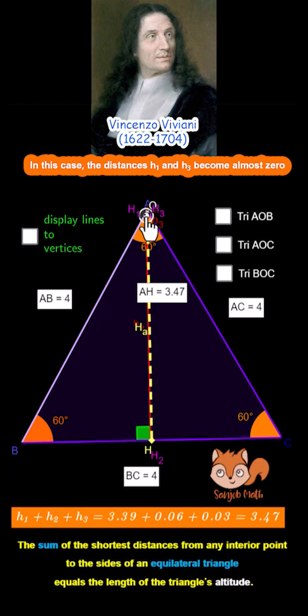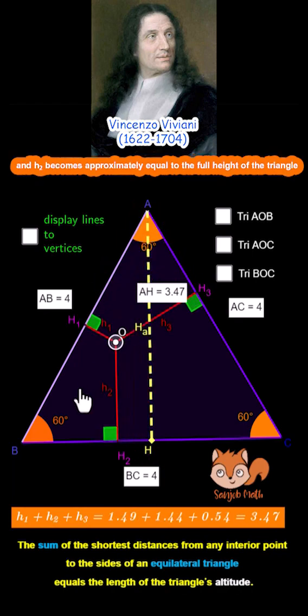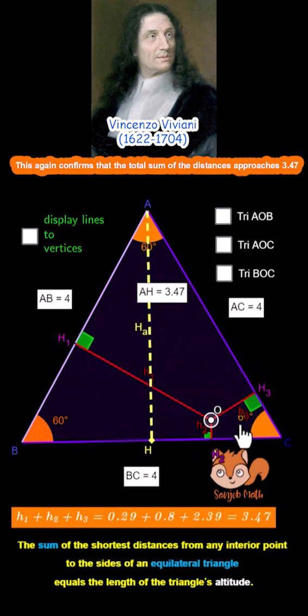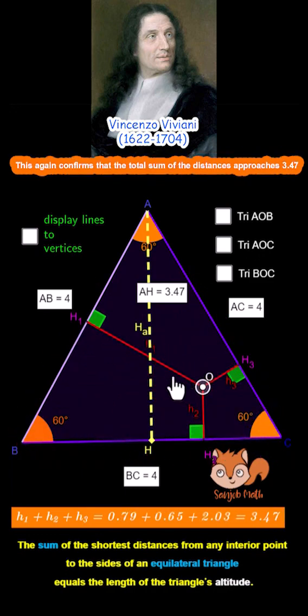The distances H1 and H3 become almost zero, and H2 becomes approximately equal to the full height of the triangle. This again confirms that the total sum of the distances approaches 3.47.